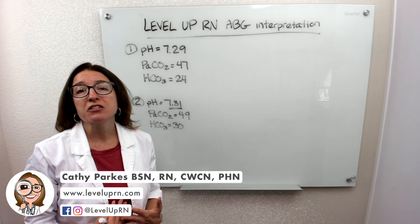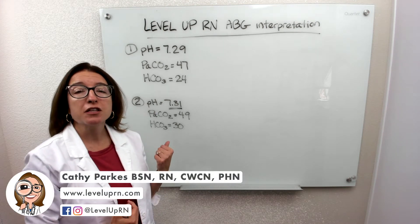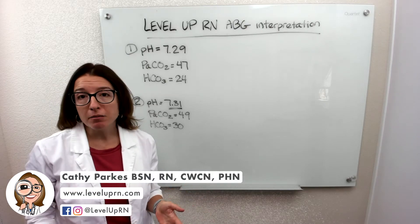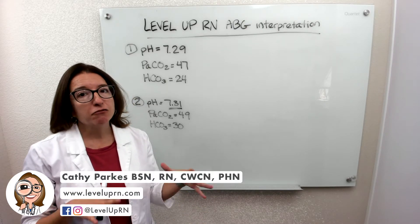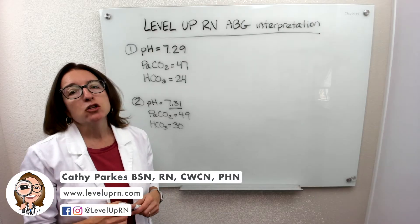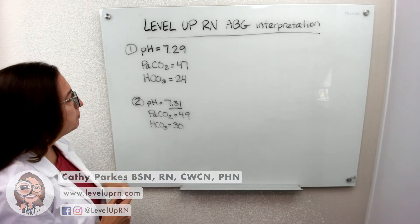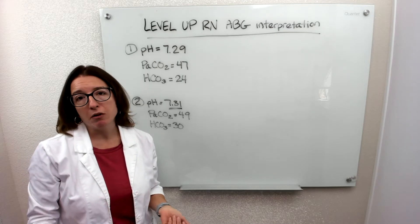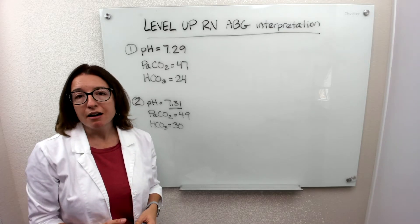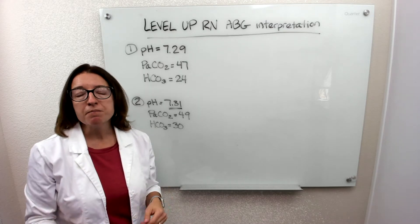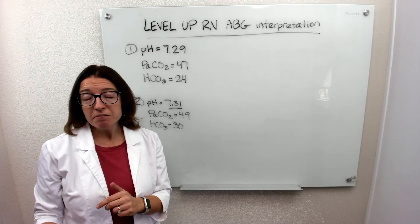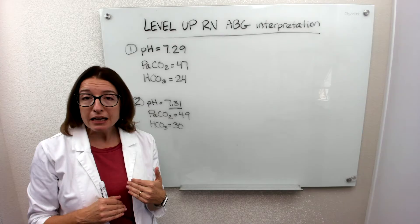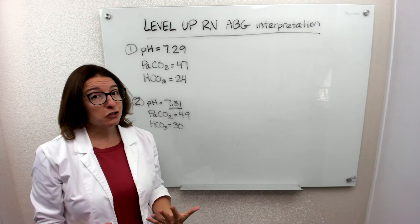Starting in this video, we are going to start going over some ABG interpretation problems. I'm going to go through a lot of problems and try to hit all the different variations you may get. You can download these problems from our website leveluprn.com and follow along with me. There is also an answer key on the website so if you want to later work through these problems independently and check your answers, you can do that.